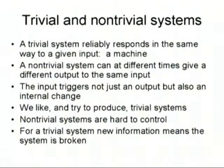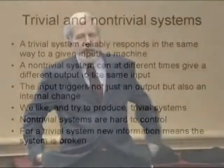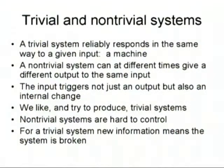A trivial system is a system that always does the same thing. Take a car: if you turn the steering wheel to the left, you want the car to go left; turn it right, you want it to go right. If it goes left 95% of the time and right 5% of the time, that's not a good car — you'd say it's broken. What we like is trivial systems because they're easily controlled and predictable. Machines that do different things at different times — sort of like teenagers — are more difficult to control, more unpredictable, and more challenging to manage.